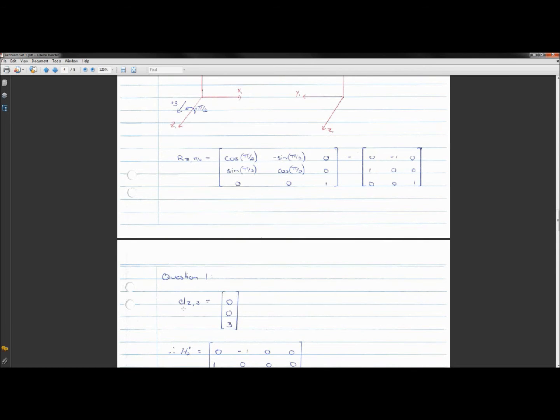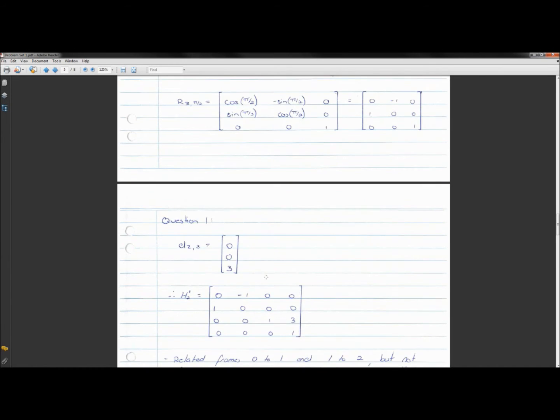And we didn't perform any other rotations, so this is our overall rotational matrix. We then combine that and our displacement, so 0 in the X, 0 in the Y, 3 in the Z, to give us H1,2, and its overall homogeneous transform.